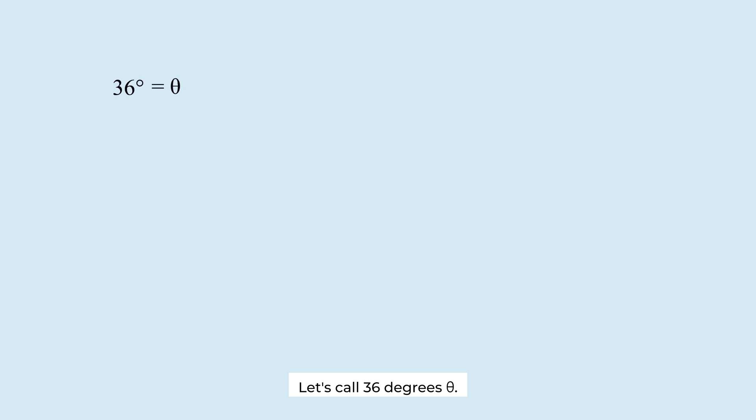Let's call 36 degrees theta. Then 5 theta is 180 degrees. So tangent 5 theta equals tangent 180 degrees. Since this value is 0, tangent 5 theta is 0.